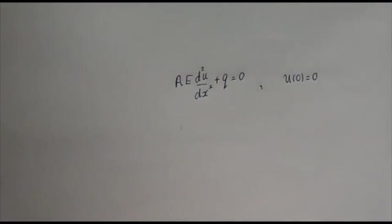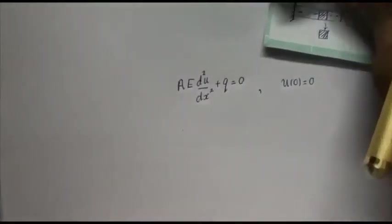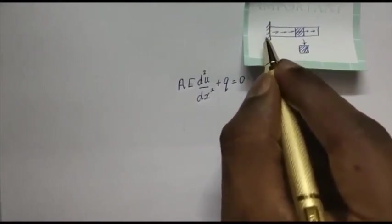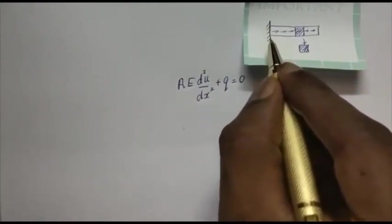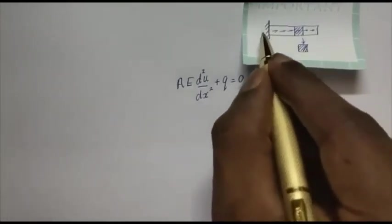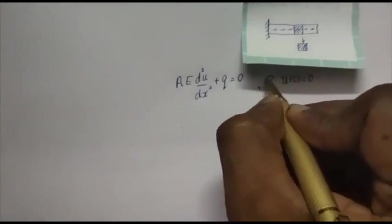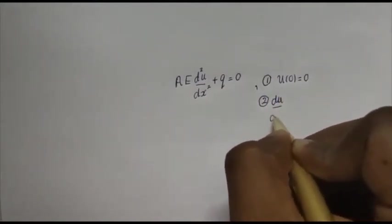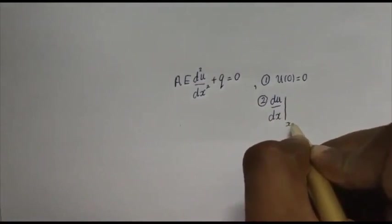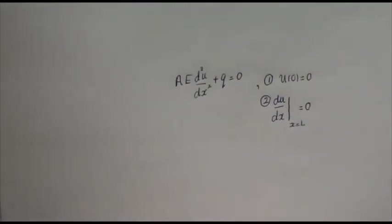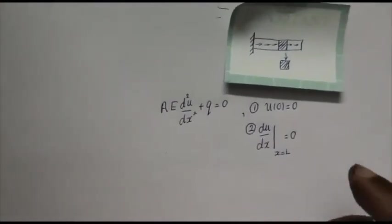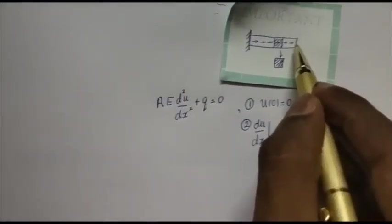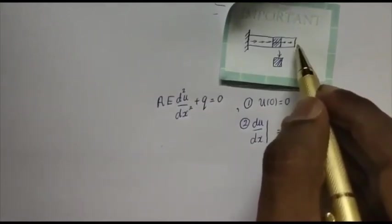The first boundary condition is quite axiomatic. For a cantilever bar, the displacement at the left end is 0 because the bar is fixed — it is built into the wall and encasted. So, u(0) = 0 is the first boundary condition. The second boundary condition is du/dx at x = L equals 0. This is explained in the previous video — the strain at the free end is 0.